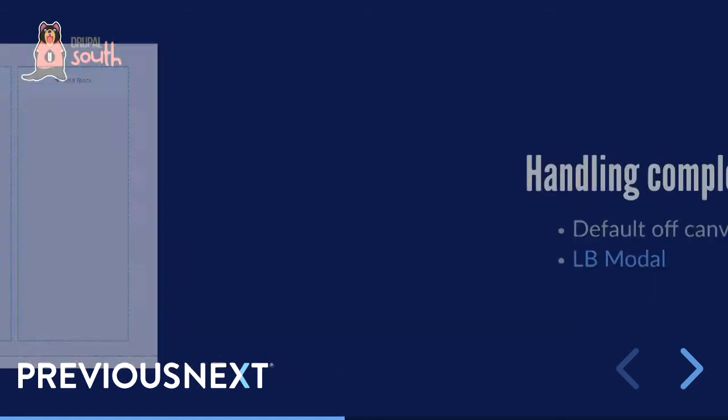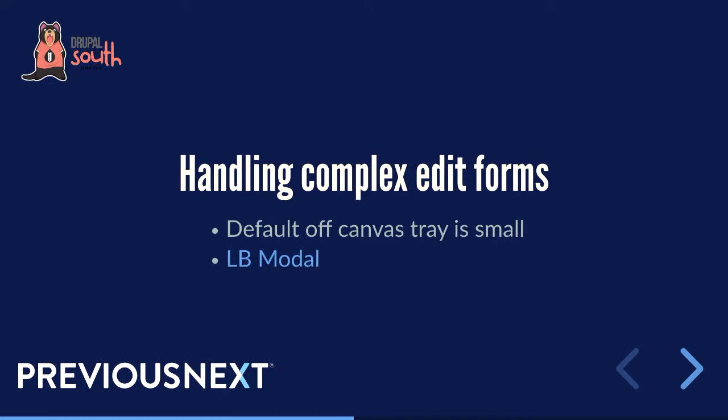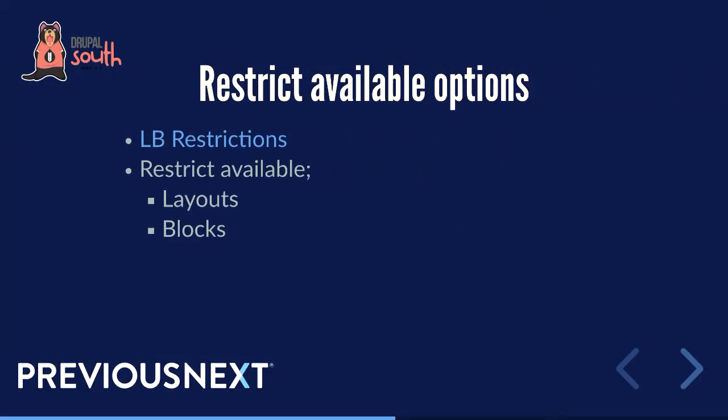An interesting problem when editing in Layout Builder is the way it's been implemented: forms slide in on a canvas tray on the right, and it's easy to outgrow the dimensions of that. There are a couple of possible solutions: the Layout Builder Modal module, which renders right-hand column forms in a modal — it's not yet fully accessible and has some implementation issues, so it has potential but might not be the solution. Another relatively straightforward approach is simply widening the canvas tray.